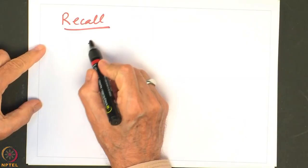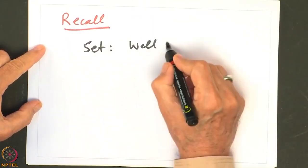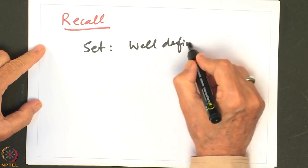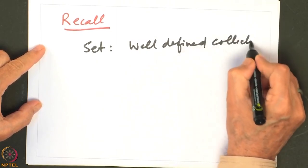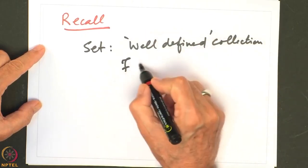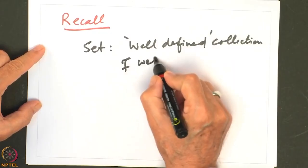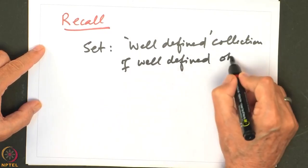Welcome back. In the previous lecture, let us just recall we had defined the notion of a set — it is a well-defined collection of well-defined objects.